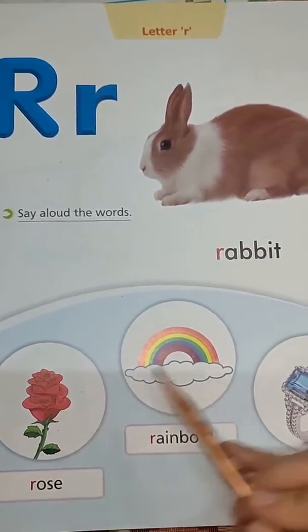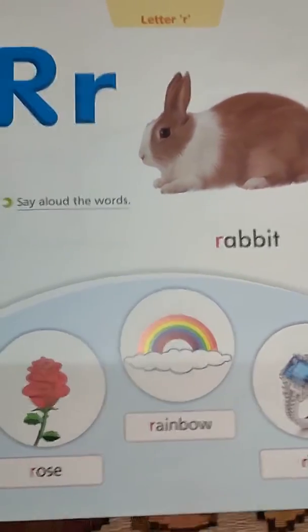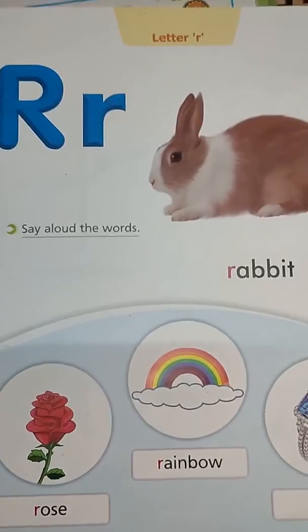R for rabbit, rose, rainbow, ring. Now let's do the practice of making letter R. You have learned R for rabbit, R for raincoat, R for rain, R for rope. So many pictures are there and we will learn some more in the next video. Let's revise: R for rabbit, rainbow, ring, rose, river.